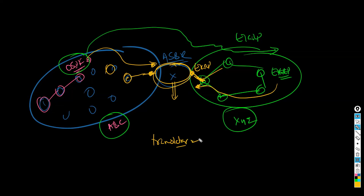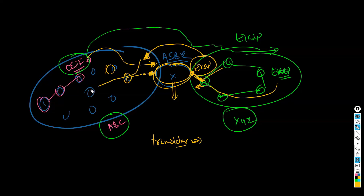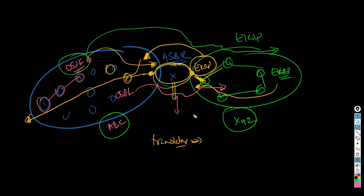Just like a translator converts from one language to another, the Autonomous System Border Router accepts routes from EIGRP, translates them into OSPF, and sends them to all remaining OSPF routers. Likewise, it receives all OSPF routes from the left side and translates them back into EIGRP.